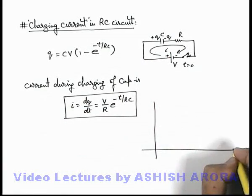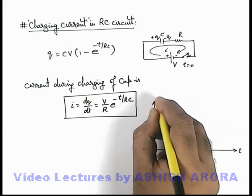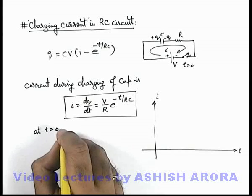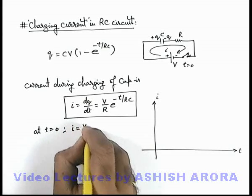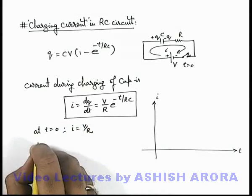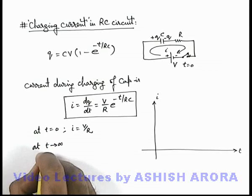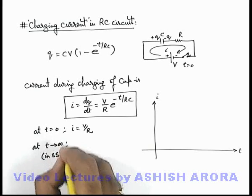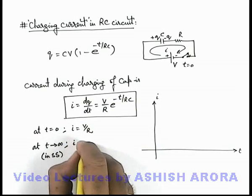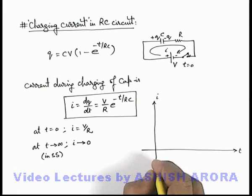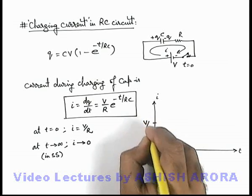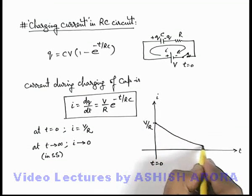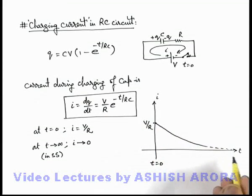If we plot the variation of current with time, at t equal to zero the value of current is V/R. At t tending to infinity — that is, in steady state after a long time — the value of current tends to zero. So at t equal to zero the current was V/R and it gradually drops down according to an exponential curve, finally decreasing to zero.